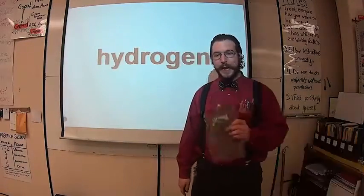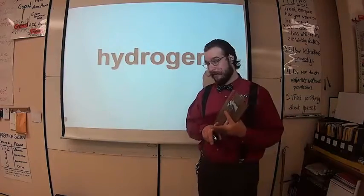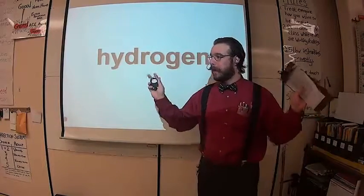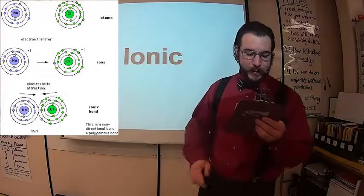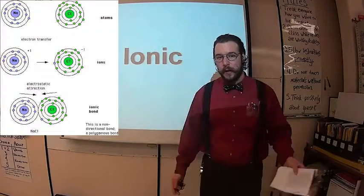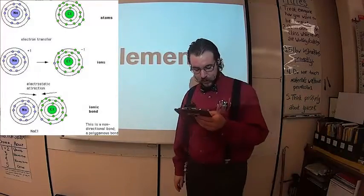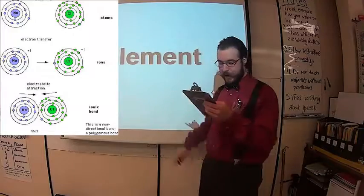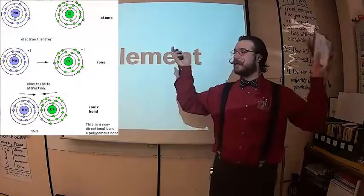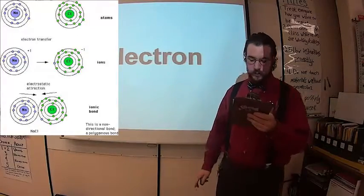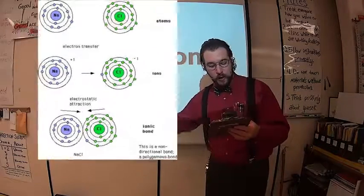Ionic bonds are next. We've got hydrogen bonds. We're going in order of strength. Ionic bonds are next. They occur when one element takes an electron from another. So ionic bonds occur when one element takes an electron from another.